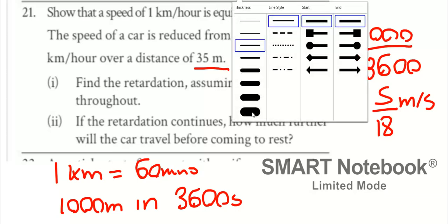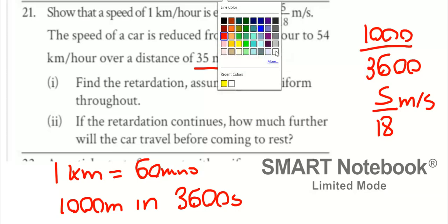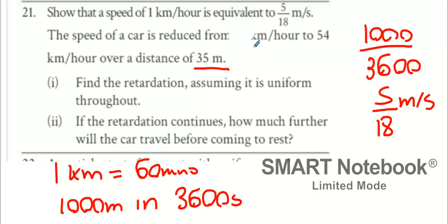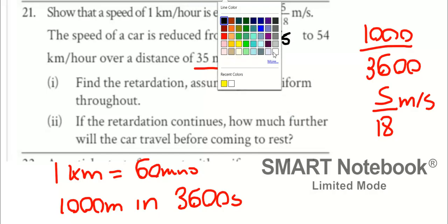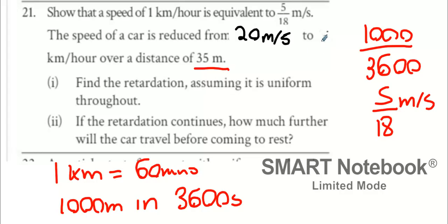So will somebody multiply 72 by 5 over 18? It's 20 meters per second. And 54 is actually 15. So I've rechanged the question.